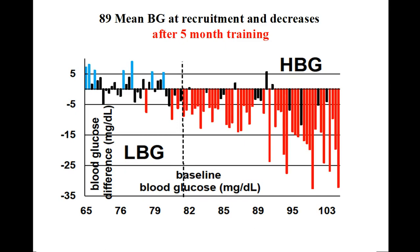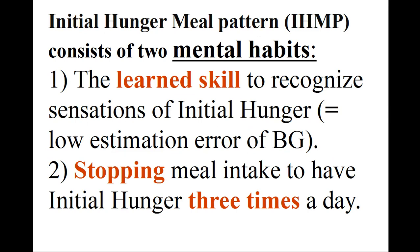Abbreviations: HBG = high blood glucose; LBG = low blood glucose, corresponding to 76.6±3.7 mg/dL. Initial hunger meal pattern (IHMP) consists of two mental habits: 1. The learned skill to recognize sensations of initial hunger, corresponding to low estimation error of BG. 2. Stopping meal intake to have initial hunger three times a day.